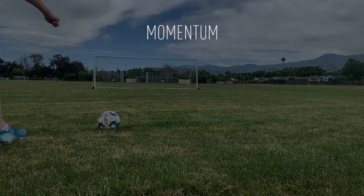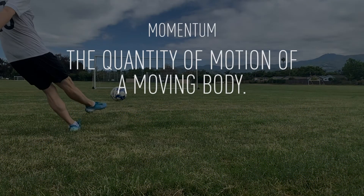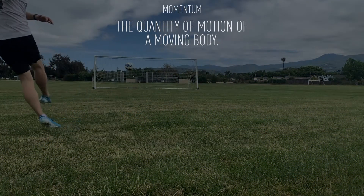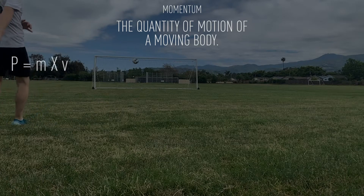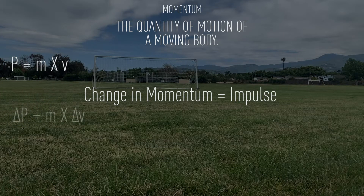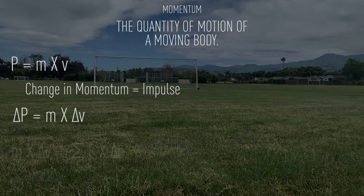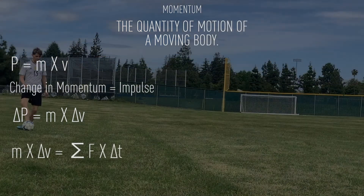Momentum is defined as the quantity of motion of a moving body. To find this quantity, we simply multiply the object's mass by its velocity. And to find the change in momentum, or impulse, we just do mass times change in velocity. This is also equal to the net force times the change in time.